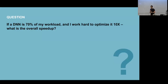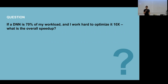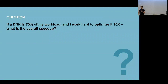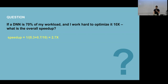We'll start with a question: if I have a workload where the deep neural network component is 70% of that workload, and I optimize that part 10x — 10 times faster — what is my overall system speedup? Take a minute to think about it. The techniques we've discussed so far can get you 10x on a deep neural network, but there's other stuff going on, so we want to know the end-to-end system improvement.